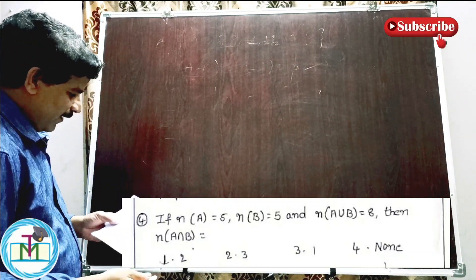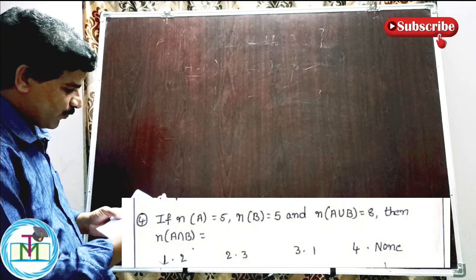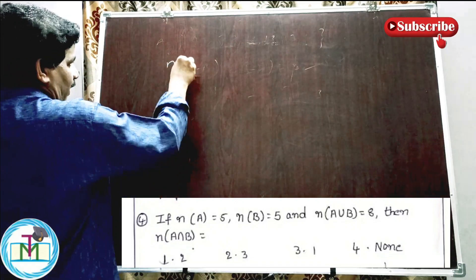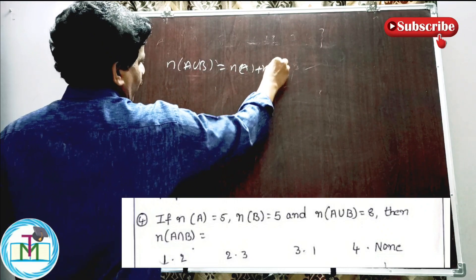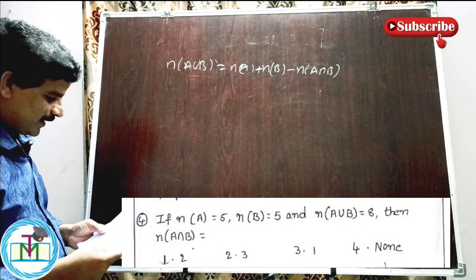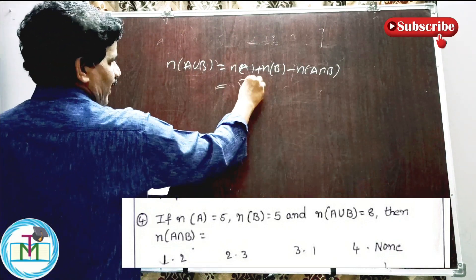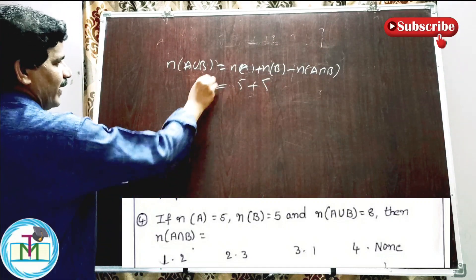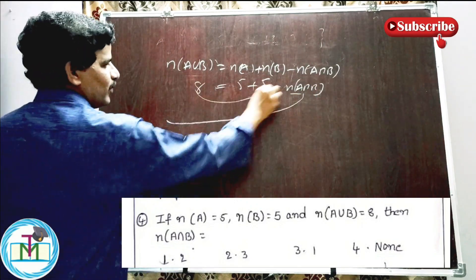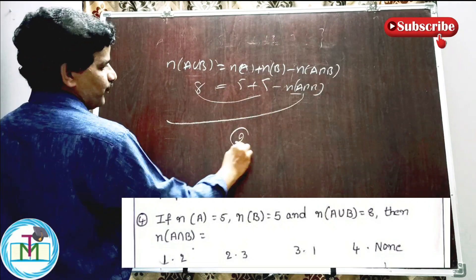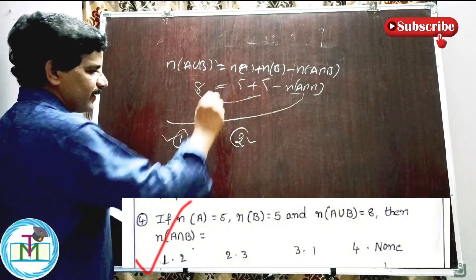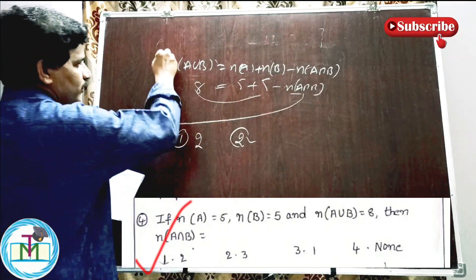Question number four: if n(A) is equal to 5, n(B) is equal to 5, and n(A union B) is equal to 8, then what is n(A intersection B)? The formula is: n(A union B) = n(A) + n(B) - n(A intersection B). So 8 = 5 + 5 - n(A intersection B). Therefore n(A intersection B) = 10 - 8 = 2.